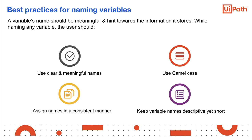The name of a variable should be meaningful and describe the information it stores. This makes it easier to understand the purpose of the variable and to maintain it. The user must follow the best practices for naming a variable and should use clear and meaningful names. The name of the variable should accurately describe its content. The user should assign names in a consistent manner and adhere to using upper camel case. For example, if you name a variable first name, you capitalize F and N. Lastly, the user should keep variable names descriptive yet short.